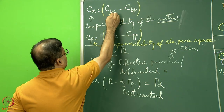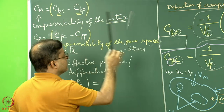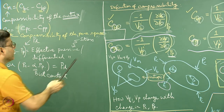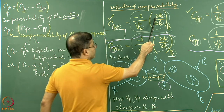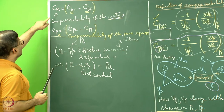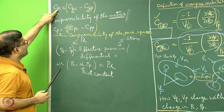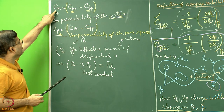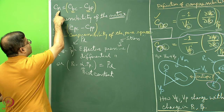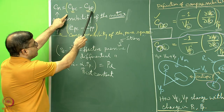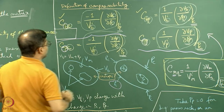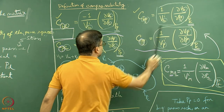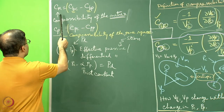Let us understand: Cbc and Cbp both involve change in Vb — seen in both equations. By writing Cm for the matrix material's compressibility, we exclude the pore space's compressibility — hence the suffix M (not B). So Cbc minus Cbp gives: that expression (where Pp is constant) minus this expression (where Pc is constant). If we know these two parameters, we can find the compressibility of the matrix.